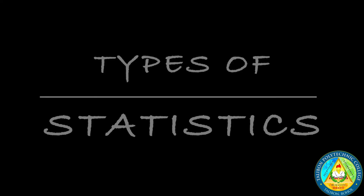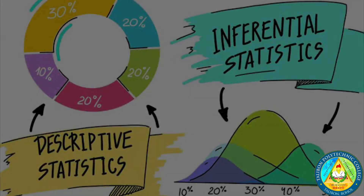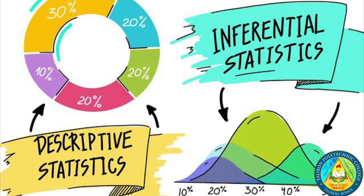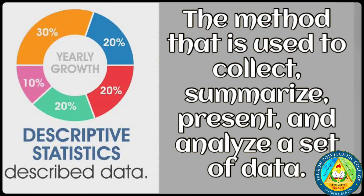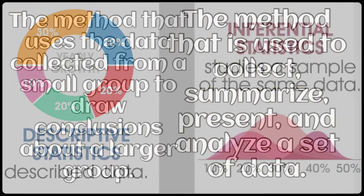The statistical methods used for these tasks come from one of the two branches of statistics: descriptive and inferential statistics. Descriptive statistics is the method used to collect, summarize, present, and analyze a set of data — for example, describing the allocation of your monthly allowance.